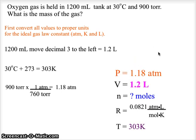Listing our knowns and unknowns, we have a pressure of 1.18 atmospheres, 1.2 liters of volume. We are looking for the moles here because we are trying to find the mass of the gas, and in order to get the mass we must go through moles. Our R value is the constant, 0.0821, and the temperature is 303 Kelvin.